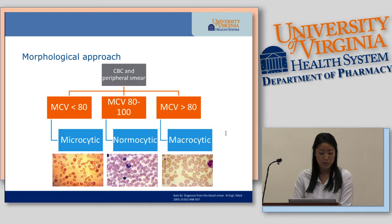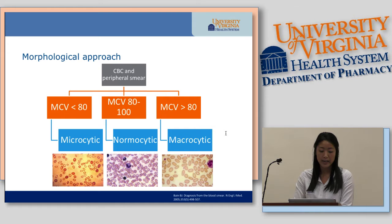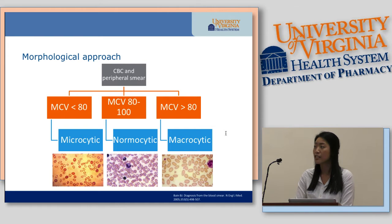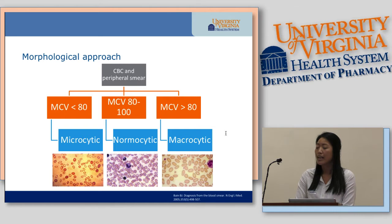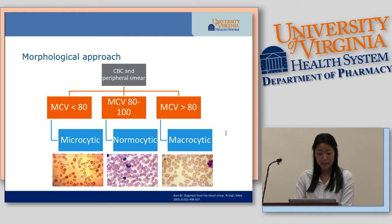Looking at your CBC and peripheral smear: if your MCV is less than 80, it's defined as microcytic. If it's between 80 and 100, those are the normal values, so it's described as normocytic. And then MCV greater than 100 would be macrocytic.